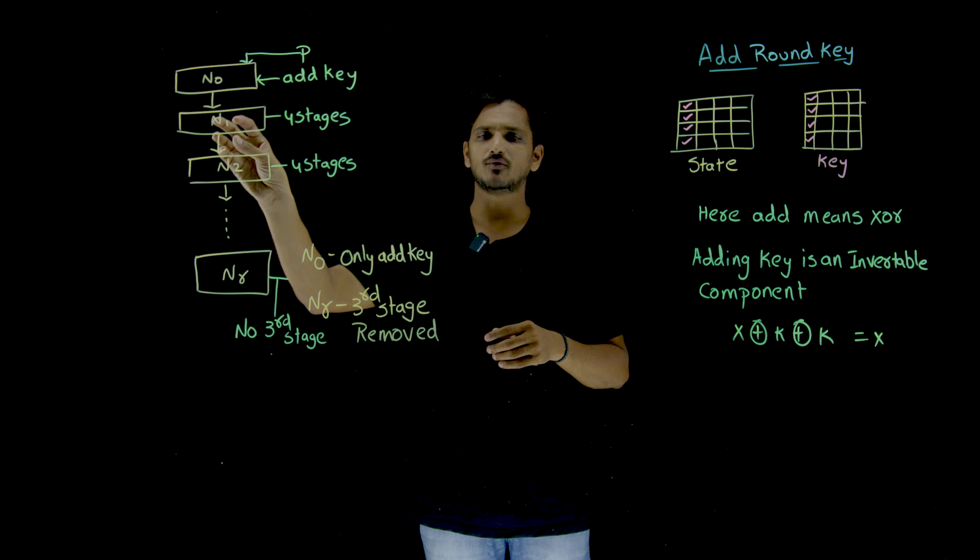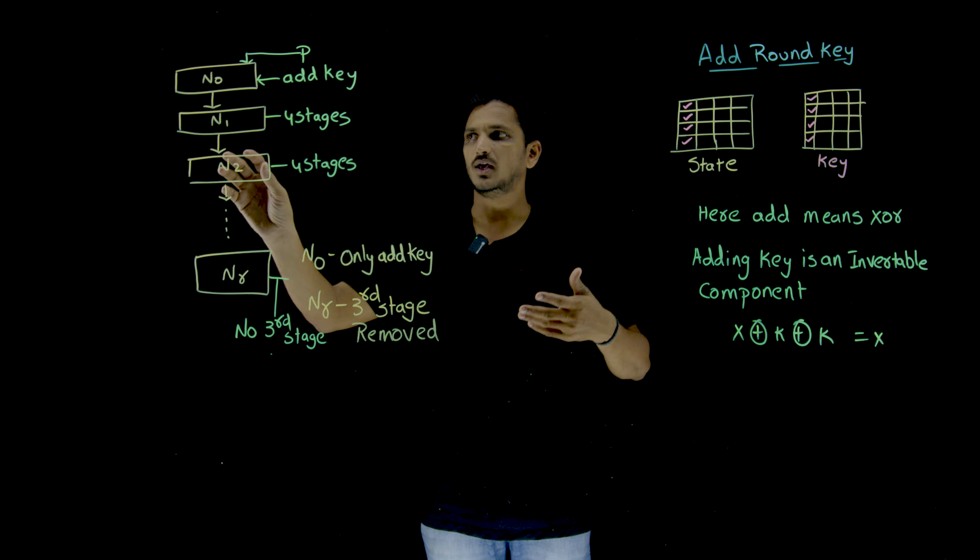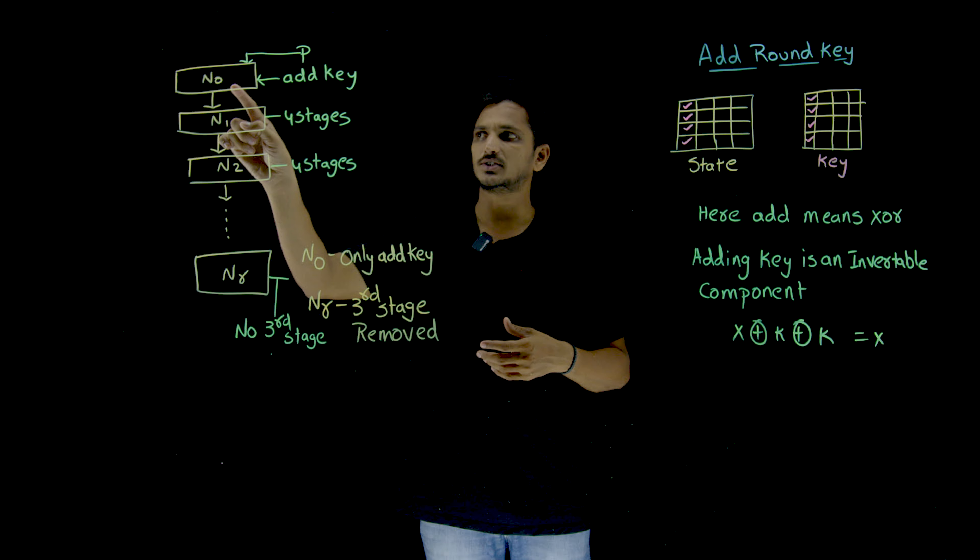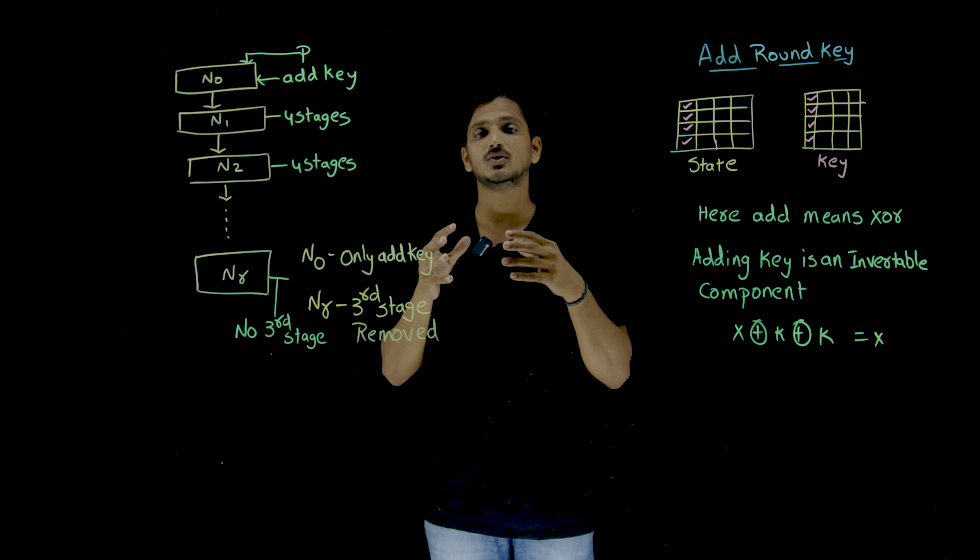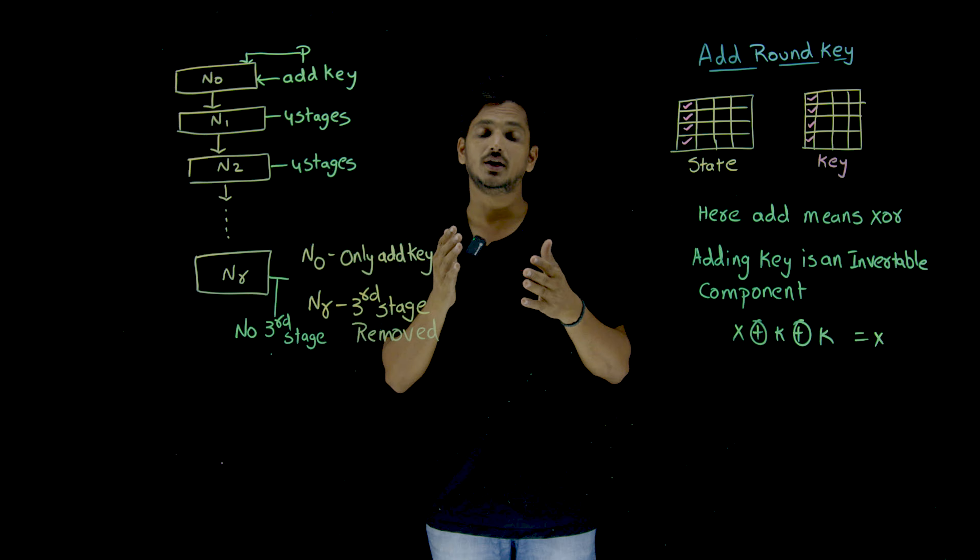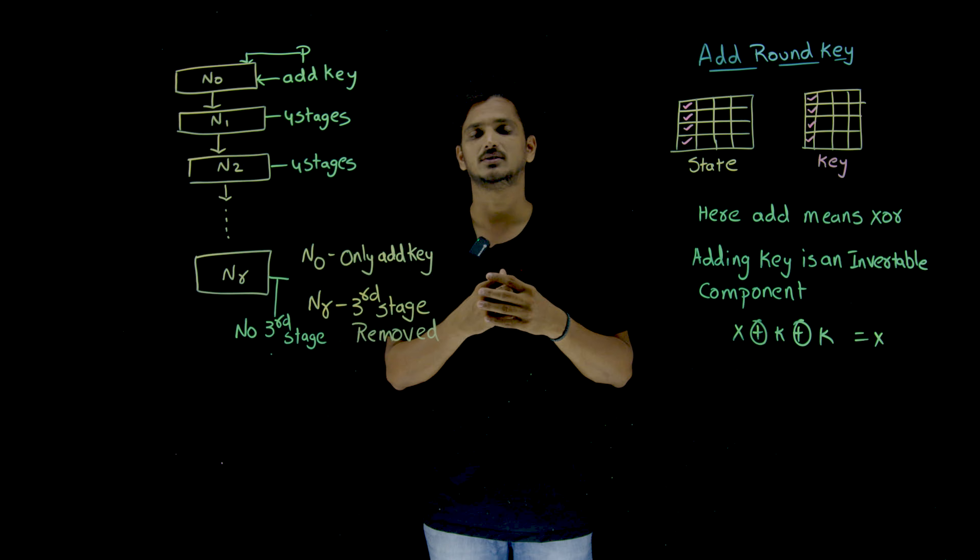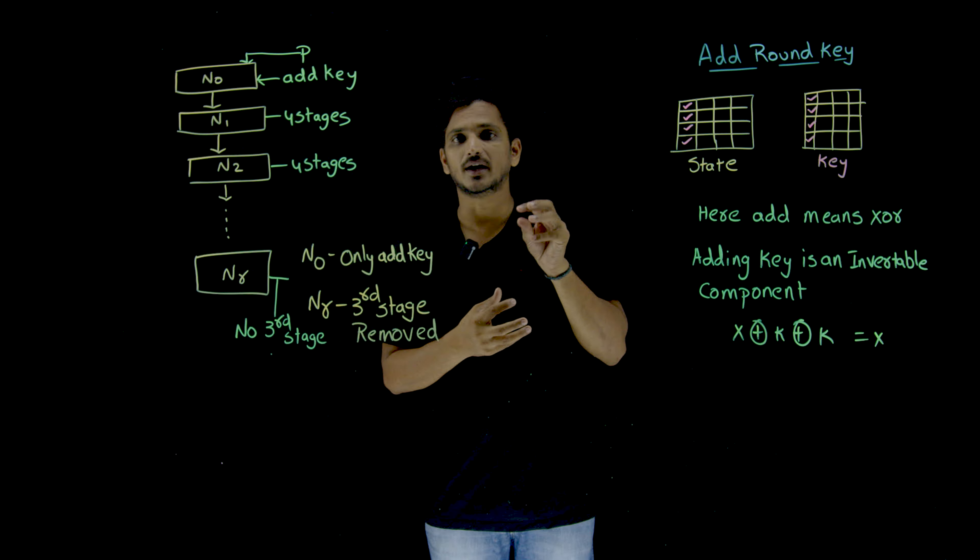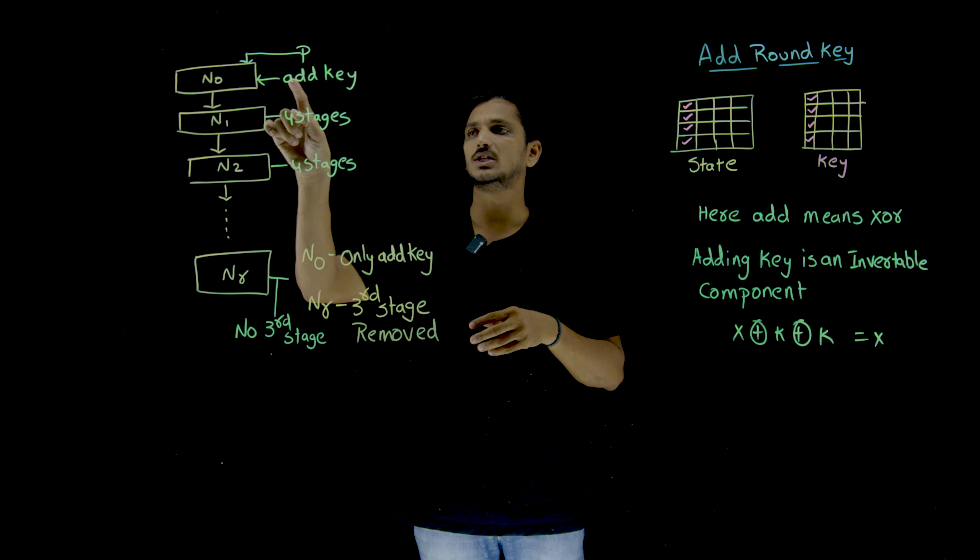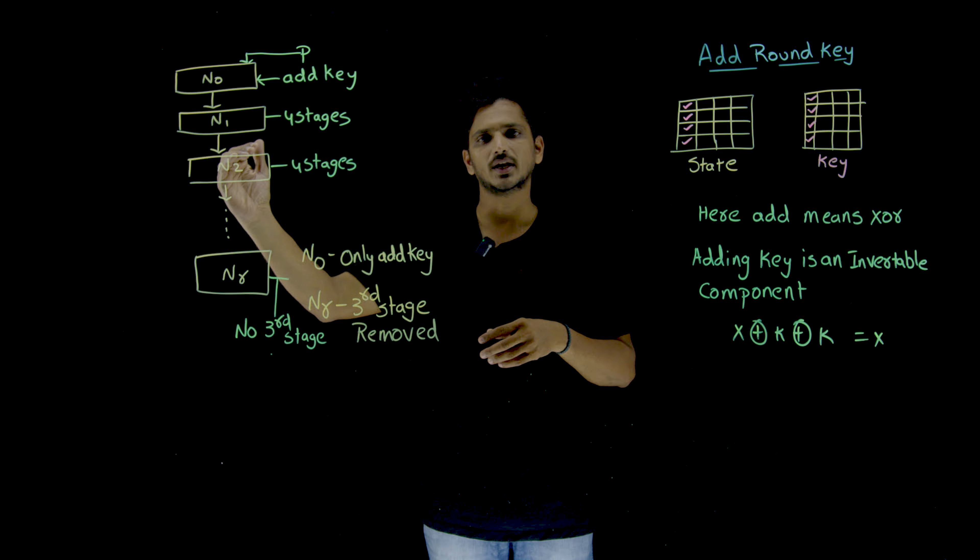It comes out of it. Then in N1, it goes to 4 stages. In N2, it will go into 4 stages. By adding the first, by adding key in the first round, means key is also getting affected. Because in the next round, it is moving in, it is taking care of mixing columns, mixing bits and all those things. So key is also getting affected. That's why in the beginning, it is going to add key in the beginning, then it will go to the next round.